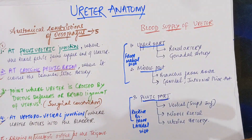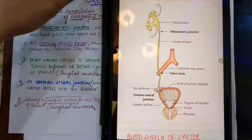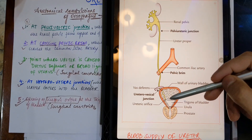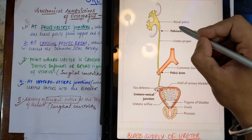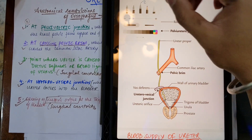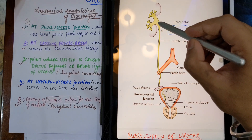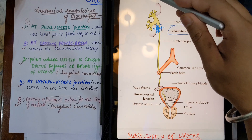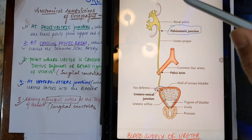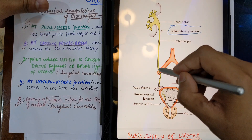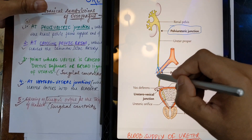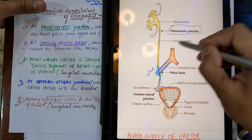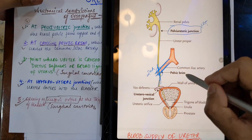Now let's relate all the constrictions on the diagram. In this diagram you can see the renal pelvis and the ureter showing its pathway as it enters the bladder. The first constriction is at the pelvi-ureteric junction — where the upper end of the ureter meets the renal pelvis. The second constriction is where the ureter crosses the pelvic brim, which also corresponds to where it crosses over the common iliac artery.